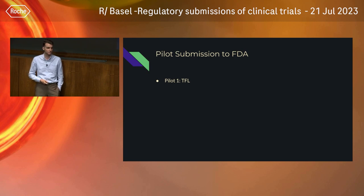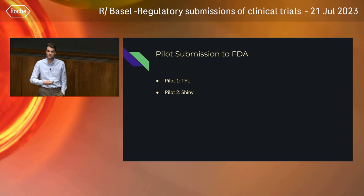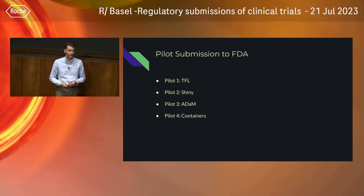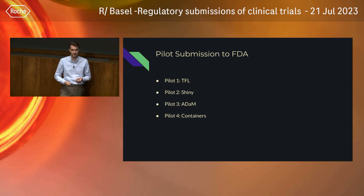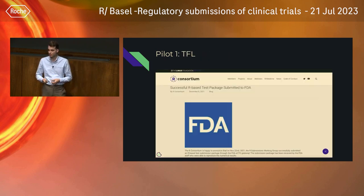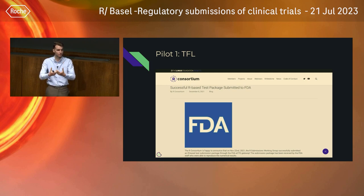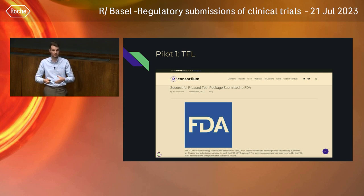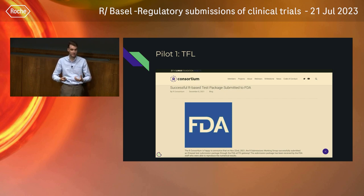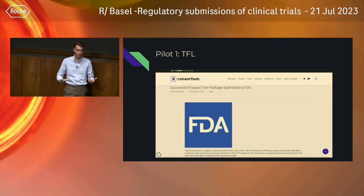There have been four pilot submissions so far. The first focused on submitting tables, listings, and figures created in R — basically switching from SAS to R, packaging them up, and submitting via the eCTD portal to the FDA. That happened in late 2019. We got feedback, made some adjustments — nothing major — and it was a successful first pilot. In many ways it was groundbreaking as the first use of open source tools, but on the other hand we still submitted digital paper. Not too interesting in that sense.